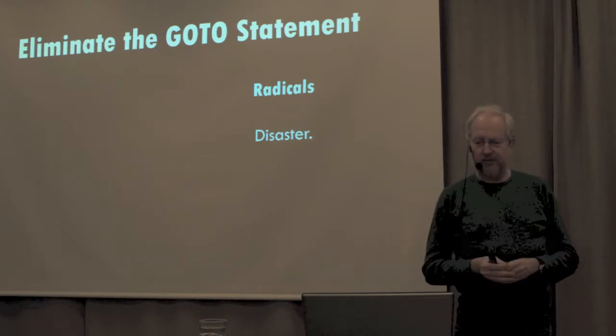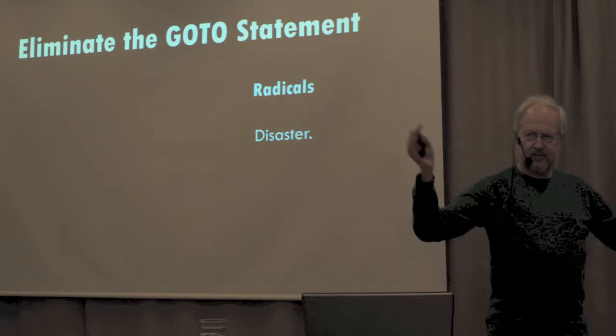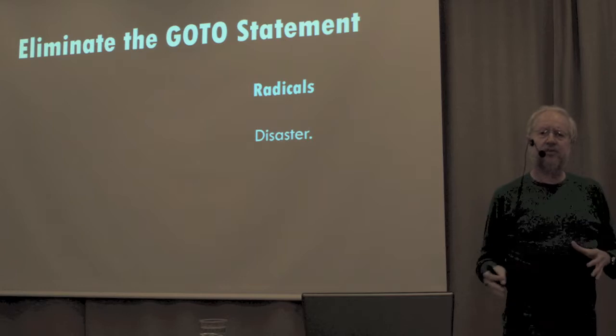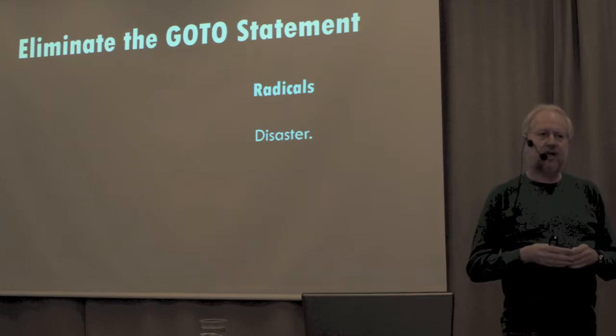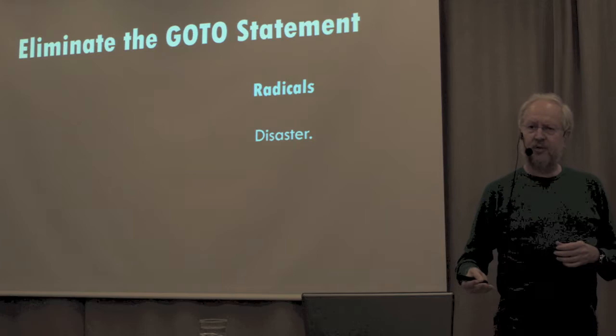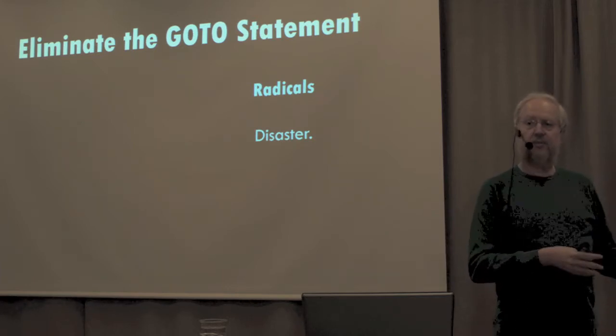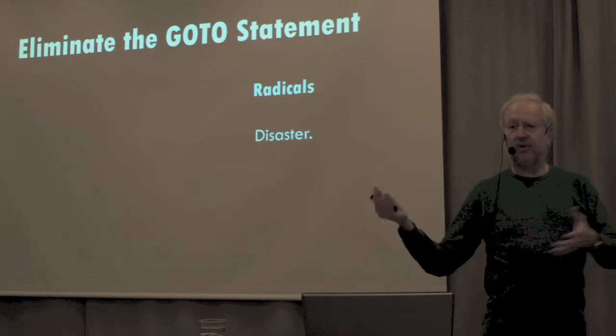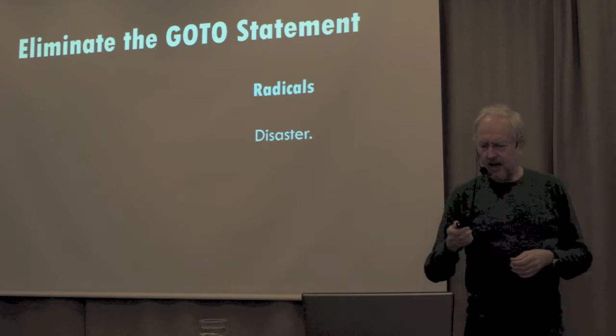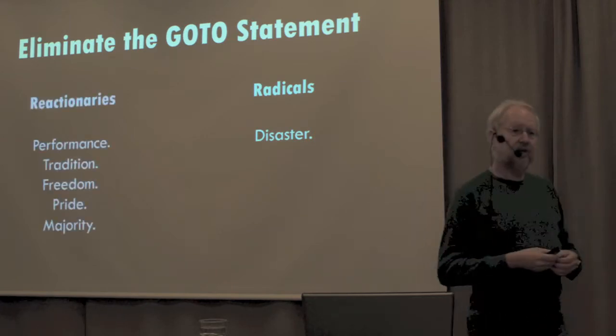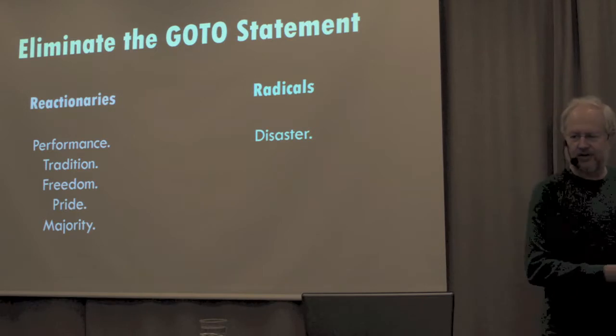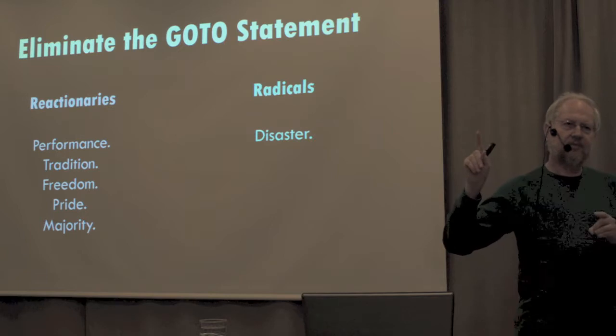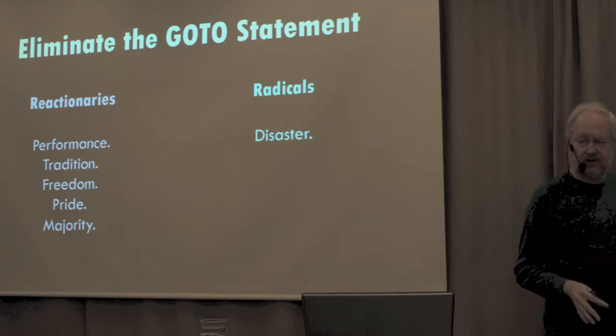Dijkstra represented the radicals. The radicals said it's a disaster. They're all drama queens talking about how terrible the Go-To was. There had been recent research which suggested that if you add else and while to your programming language, that eliminates most of the need for Go-To. New languages were starting to accept those features. So let's get rid of the Go-To. On the other side were the reactionaries. The reactionaries said, while and else get rid of some of the need for Go-To, but not all of it. We still need the Go-To.